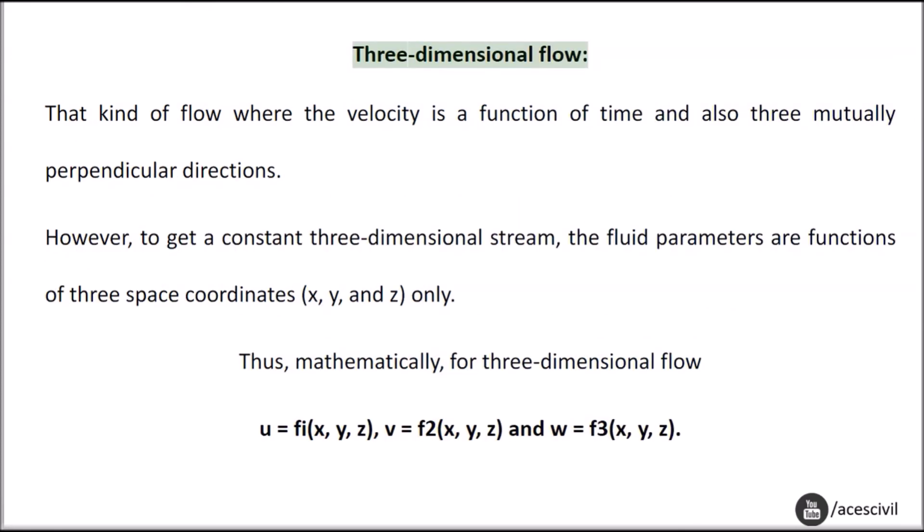Three-dimensional flow: That kind of flow where the velocity is a function of time and also three mutually perpendicular directions. However, to get a steady three-dimensional flow, the fluid parameters are functions of three space coordinates x, y, and z only. Thus mathematically, for three-dimensional flow: u = f₁(x, y, z), v = f₂(x, y, z), and w = f₃(x, y, z).